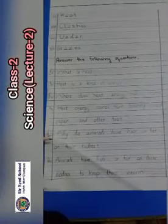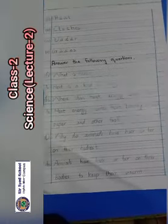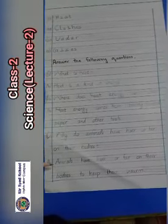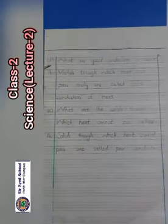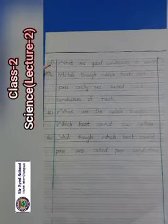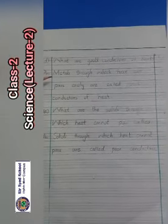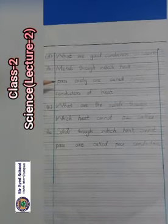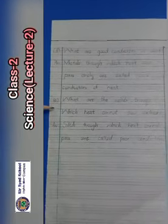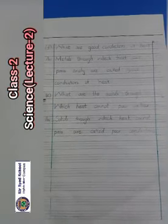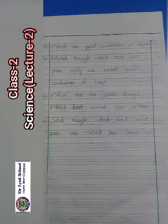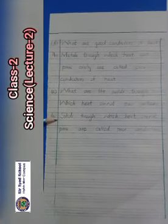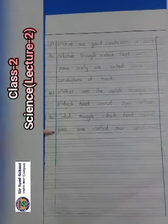Next question: Why do animals have hair or fur on their bodies? Animals have hair or fur on their bodies to keep them warm. Next question: What are good conductors of heat? Metals through which heat can pass easily are called good conductors of heat. Next question: What are the solids through which heat cannot pass called? Solids through which heat cannot pass are called poor conductors.